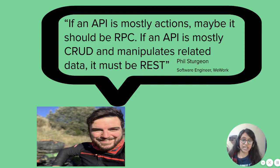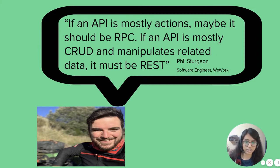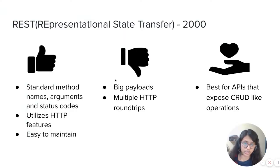To clarify this a bit, I have a quote from Phil Sturgeon: if an API is mostly actions, maybe it should be RPC. And if an API is mostly create, read, update, and delete, and manipulates related data, then it must be REST. This is one of the quotes he wrote in one of his articles on Smashing Magazine. He's a content creator — feel free to check out his content.